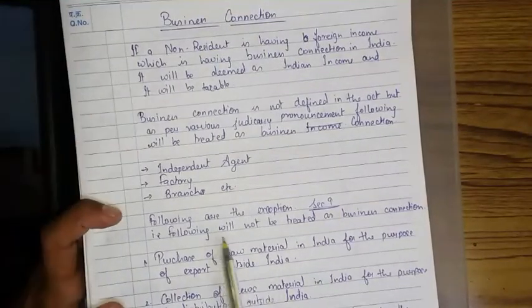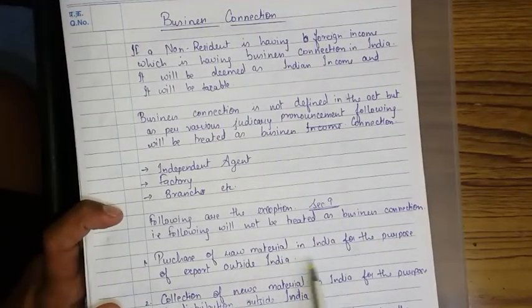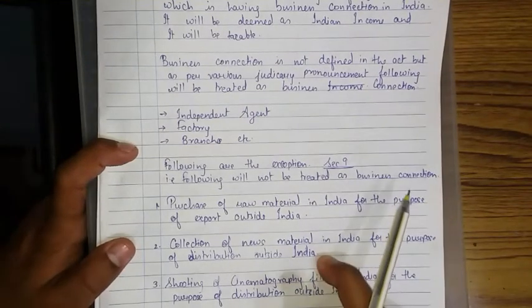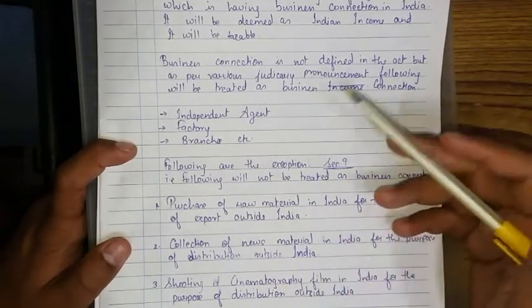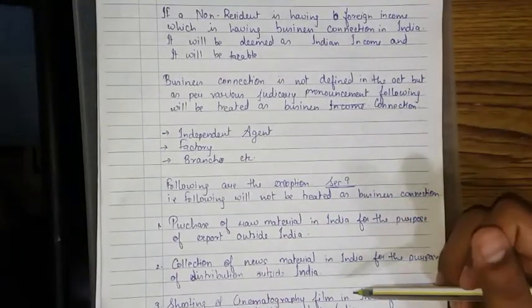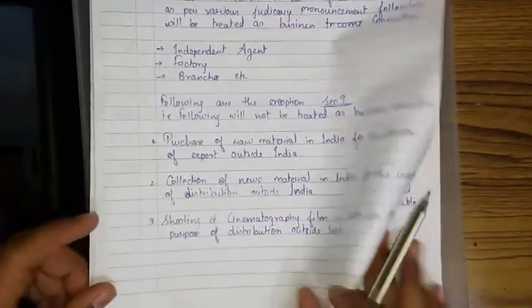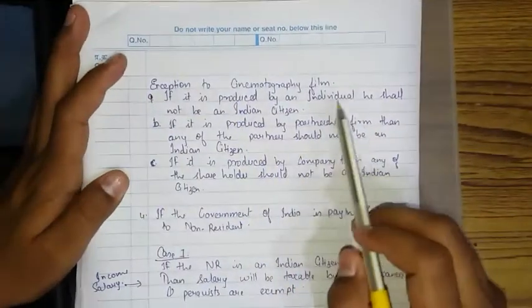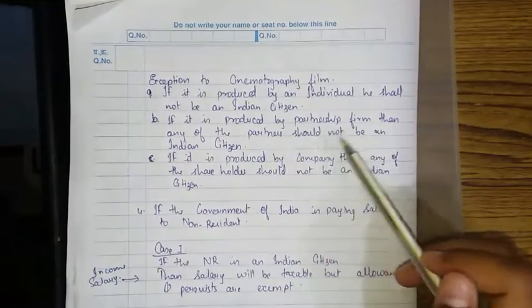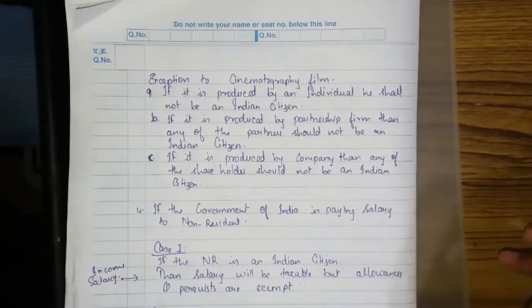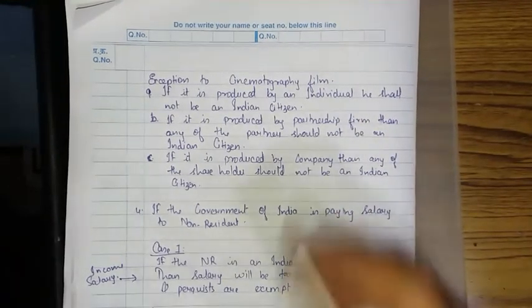Exceptions — the following will NOT be treated as a business connection: (1) purchase of raw material in India for the purpose of export outside India; (2) collection of news material in India for the purpose of distribution outside India — such as magazine articles or printing press activities; (3) shooting of a cinematographic film in India for the purpose of distribution outside India — unless the film is produced by an Indian citizen individual, a partnership whose partner is an Indian citizen, or a company whose shareholder is an Indian citizen.